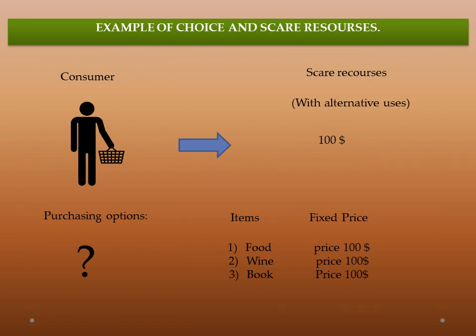To understand the scarcity definition, consider one consumer who has $100 — a scarce resource with alternative uses. He has three purchasing options: food at $100, wine at $100, and book at $100. He is a consumer who wants to purchase all these items, but he cannot, because he has very limited and scarce resources of only $100. This $100 has alternative uses — he can purchase food, or spend it on wine, or spend it on a book, but he cannot spend $100 on all three items at once.